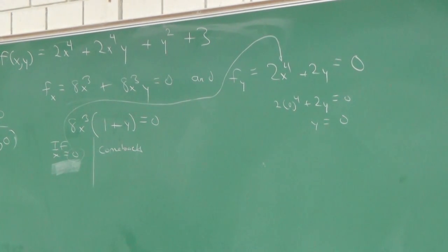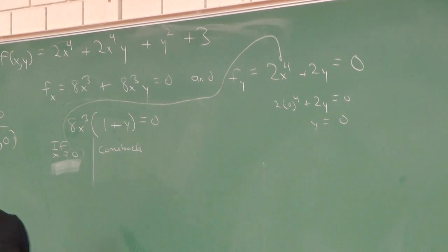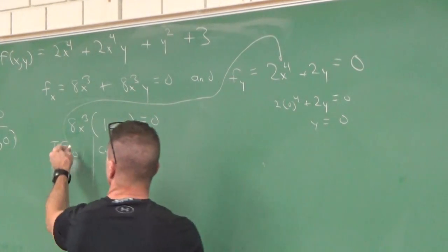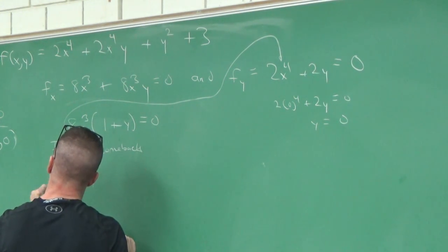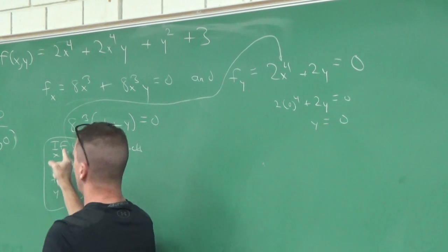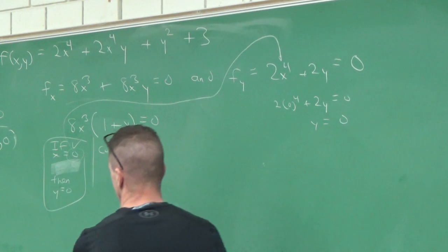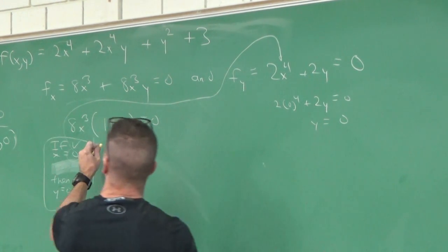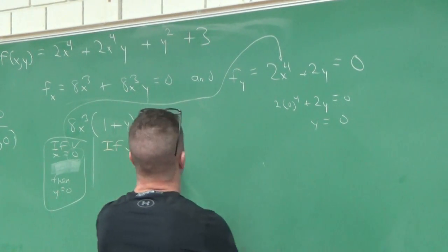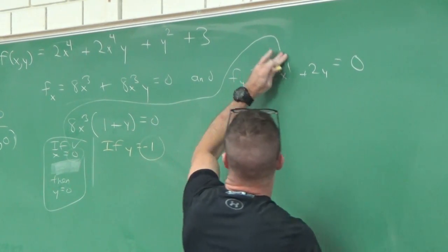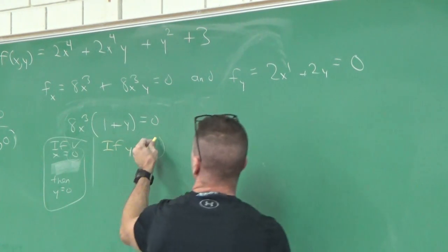Now we have to explore y = -1. Take fy: 2x^4 + 2(-1) = 0. Can you help me solve this? 2x^4 = 2, divide by 2 on both sides.